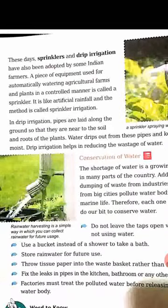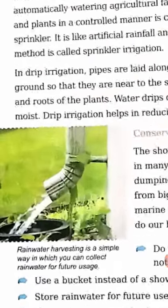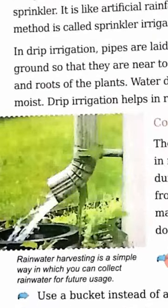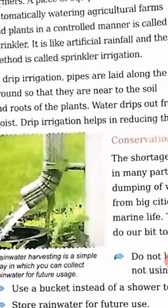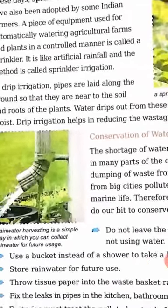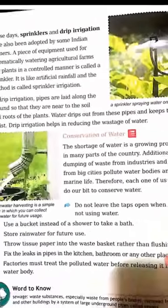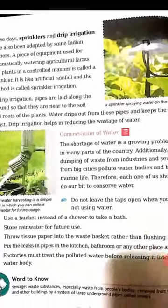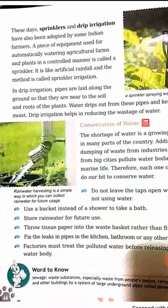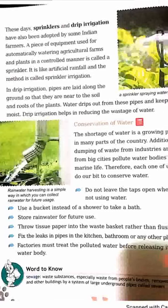In drip irrigation, pipes are laid along the ground so that they are near to the soil. Water drips out from these pipes and keeps the soil moist. Drip irrigation helps in reducing the wastage of water.